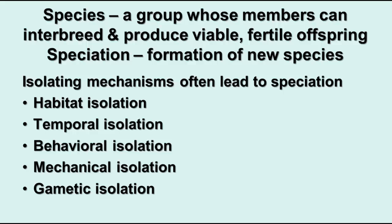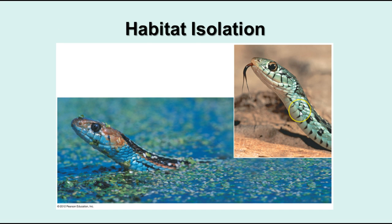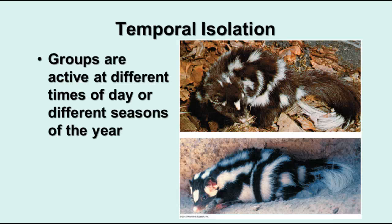A species is a group whose members can interbreed and produce viable fertile offspring. The process of speciation is the formation of new species, and there are several isolating mechanisms that can lead to it. Geographic isolation is one. Habitat isolation is when members of the same species live in vastly different habitats — for example, one snake lives in the desert and one in the water. Their habitats don't overlap, so over time they'll probably develop into separate species. Temporal isolation is when groups are active at different times of day or different seasons — two different skunks, one active by day and one by night, won't interbreed.